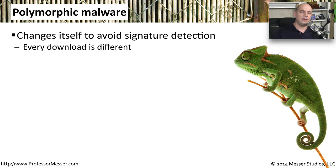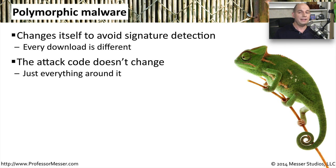Polymorphic malware is designed to take advantage of the problems associated with signature-based malware detection. Polymorphic malware will change itself every time it is downloaded. So when one person downloads an executable from a website, and a second person downloads the same executable from the same link, they actually receive two different files. The attack code inside didn't change, but everything else around that attack code did change. This creates problems for signature-based detection engines, because the signatures are looking for one particular kind of data.